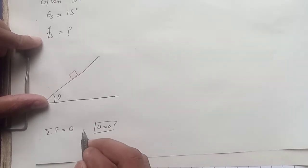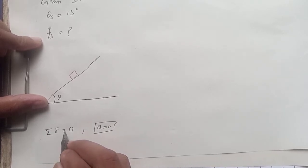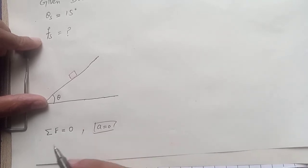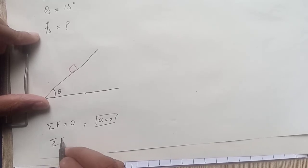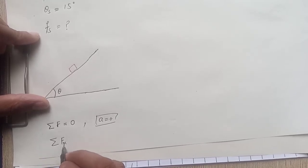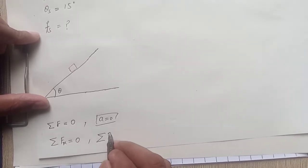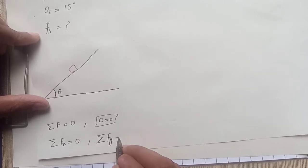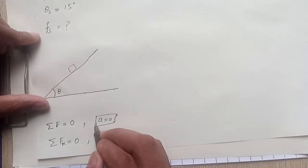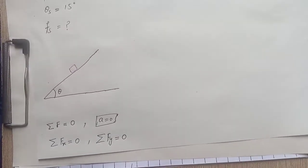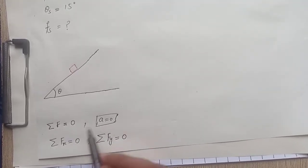By the condition of equilibrium, the sum of forces on the block is zero since it is at rest. We can resolve this condition into rectangular components: the sum of x-components of forces acting on the block is zero, and the sum of y-components of forces on the block is also zero.